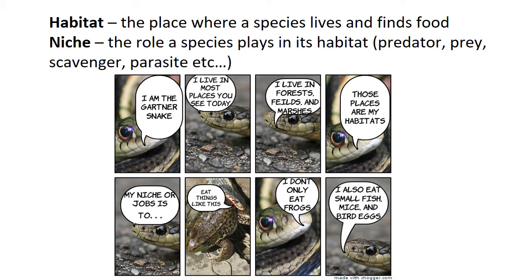Niche — or 'niche,' depending on where you're from — is the role a species plays in its habitat. For example, the predator is the one who does the hunting, the prey is the one who gets hunted, and scavengers eat animals that have already died. Parasites live in or on another organism. They all have their roles in an ecosystem — they all have their niche.